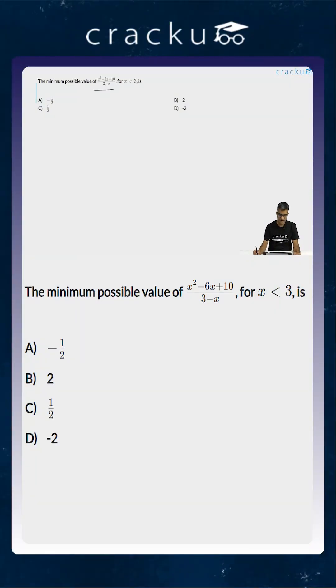In this question we are asked to calculate the minimum possible value of (x² - 6x + 10) divided by (3 - x). We are told that x is less than 3.